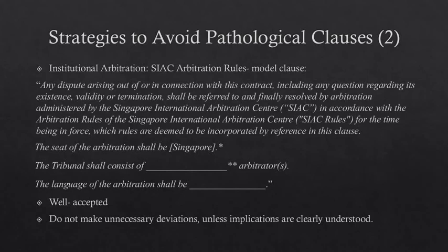The reason for adopting model clauses is that they are fairly well accepted worldwide, and courts will generally not refuse to enforce such widely used clauses. But please be cautious — read the arbitration rules thoroughly before agreeing to them. One important point: unnecessary deviations from model clauses should be avoided unless the parties are extremely careful about the proposed deviations and their implications on the conduct of arbitration proceedings. Use of model clauses contained in arbitration rules or institutional rules is one of the primary and well-recognized strategies to avoid defective arbitration clauses. There are many others, which will be discussed in the next lecture.